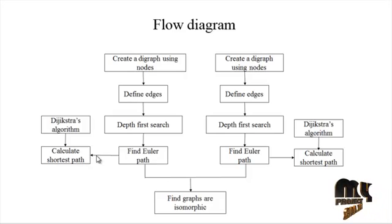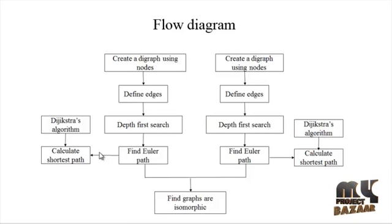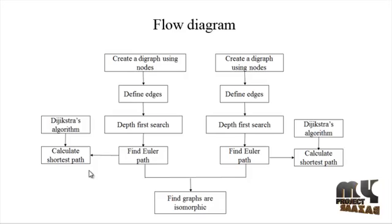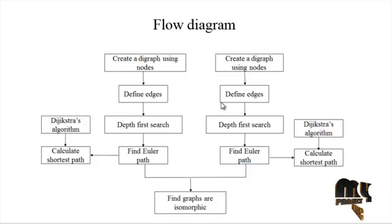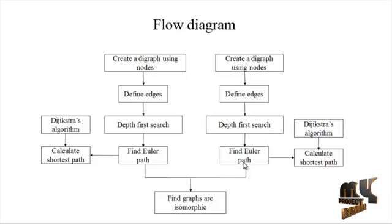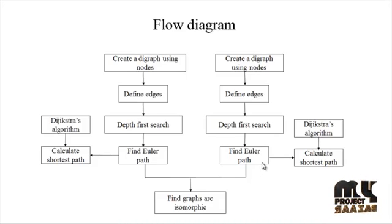Calculate the shortest path between particular nodes. If there are four nodes, which path can be most easily identified? That is calculated using Dijkstra's algorithm. Whatever the nodes of the process, it should calculate the values. All values are calculated using the Registration algorithm. It may yield the shortest path. The same process runs simultaneously on another graph — create a digraph using nodes, define the edges, perform depth-first search, find the Euler path, and find the shortest path using the Registration algorithm. Using that algorithm, it is easy to find and calculate the shortest path.